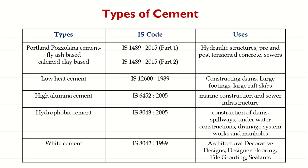High Alumina Cement is obtained by melting a mixture of bauxite and lime and grinding it with clinker. It is a rapid hardening cement with initial and final setting times of about 3.5 to 5 hours respectively. There is a significant delay in setting time due to the high presence of alumina.